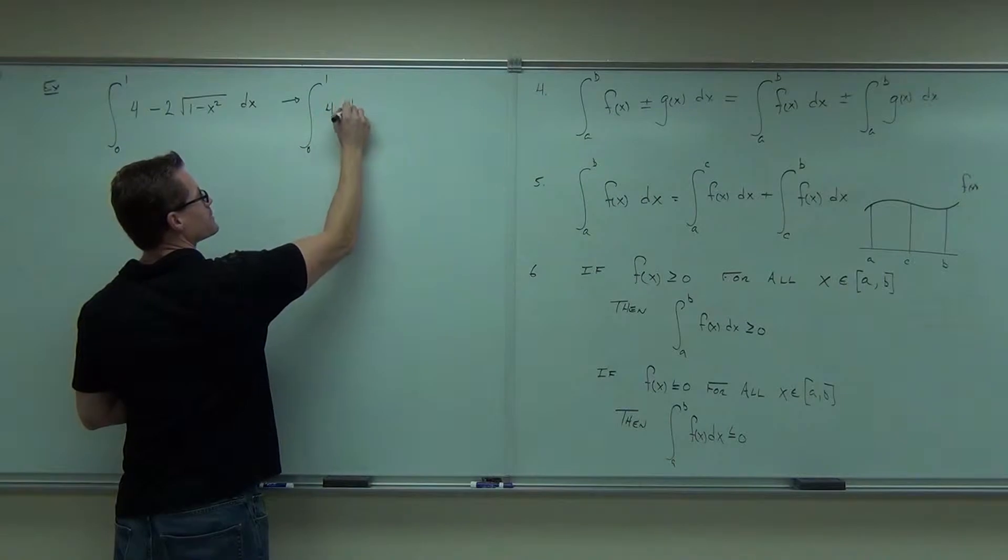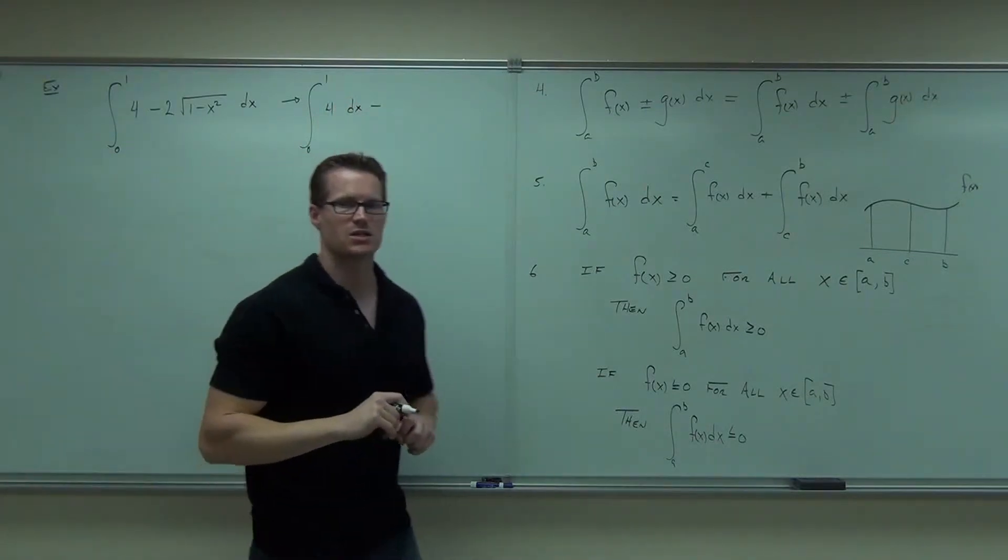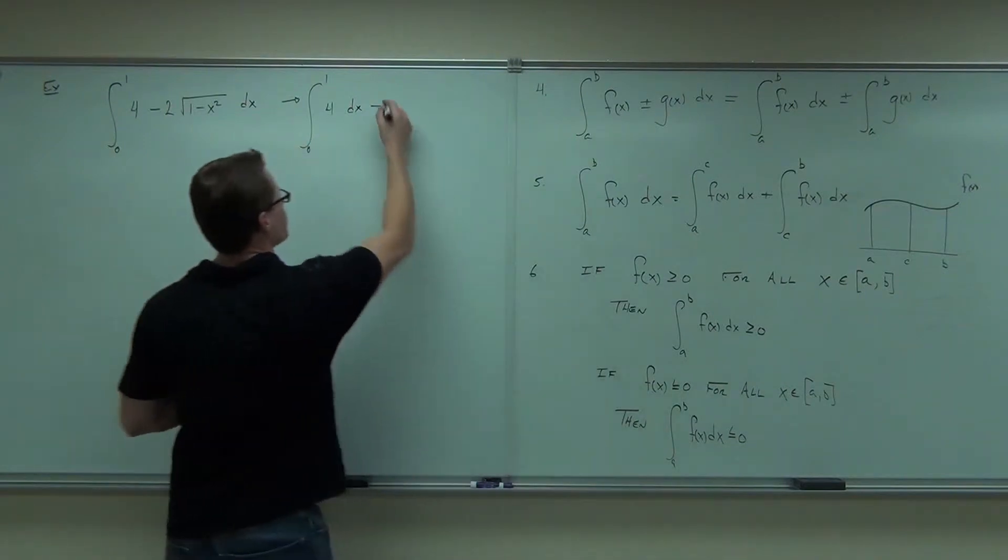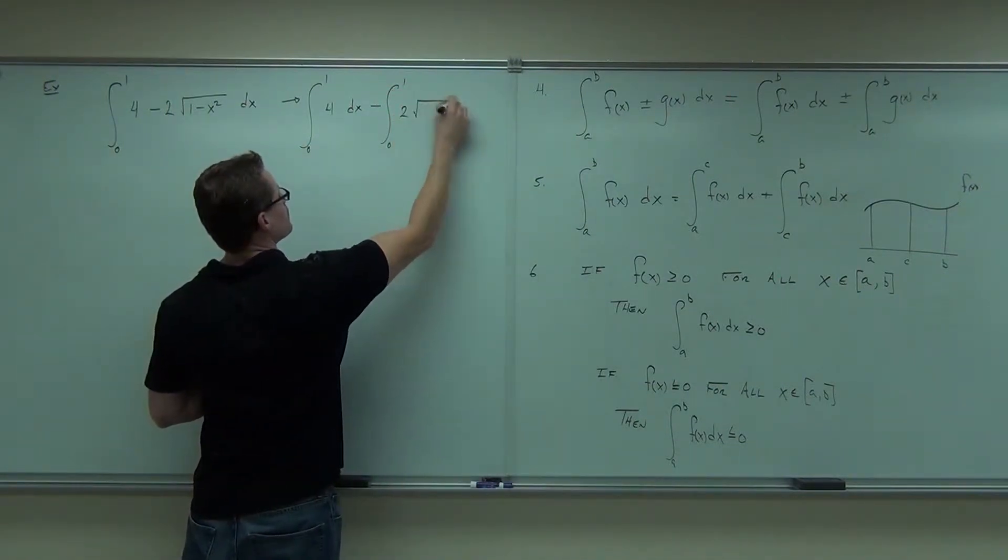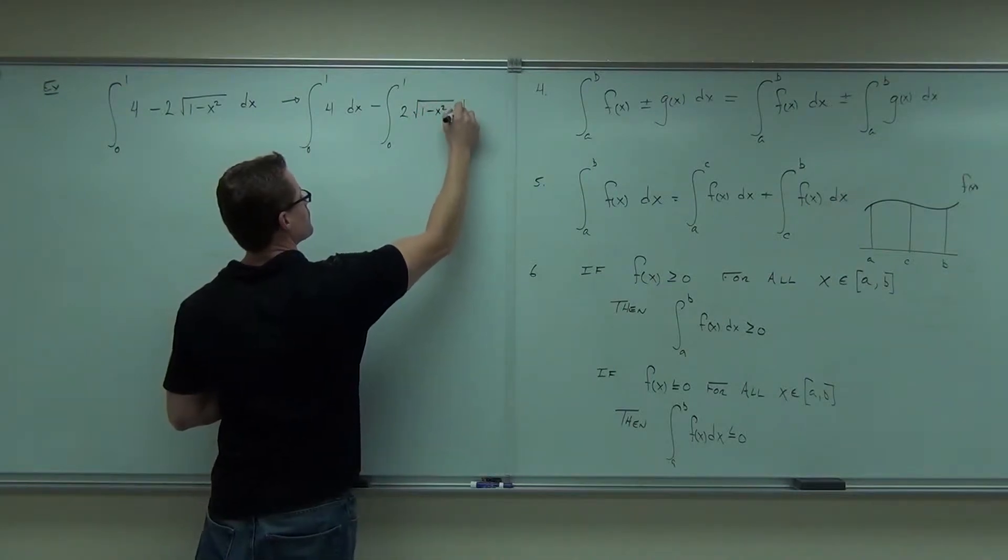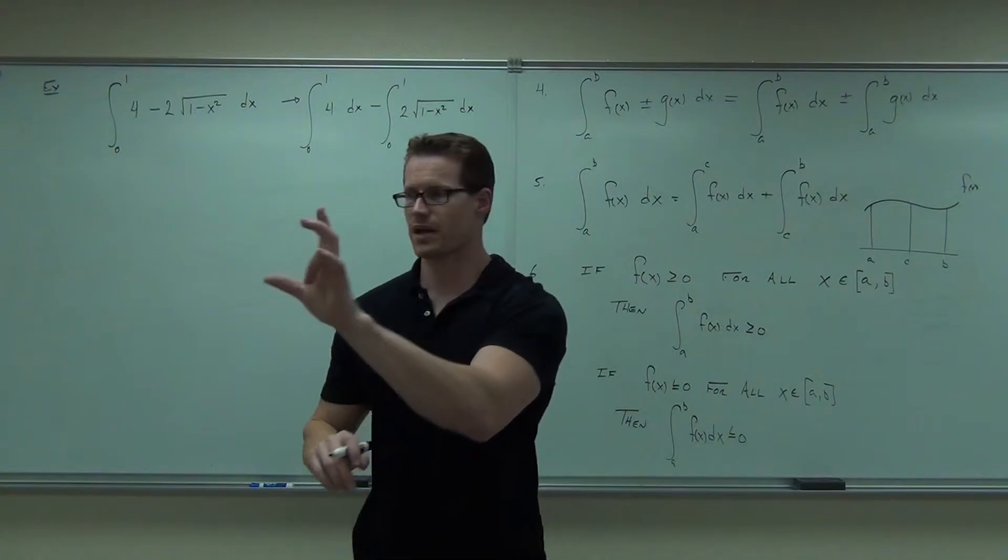So from 0 to 1 of 4dx minus, tell me something else I could do on the second part of it. After I write it this way, I'll write it in every step for you. Yeah, absolutely. I can pull that constant 2 out in front of my integral.